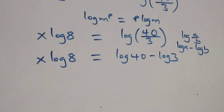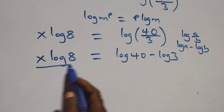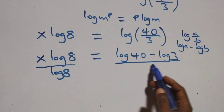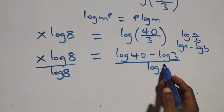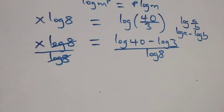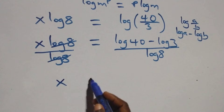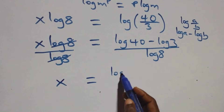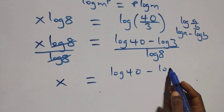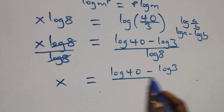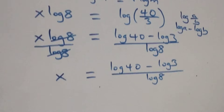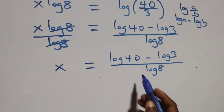Next, divide both sides by log(8). Log(8) cancels on the left, and we have x equals (log(40) minus log(3)) over log(8).